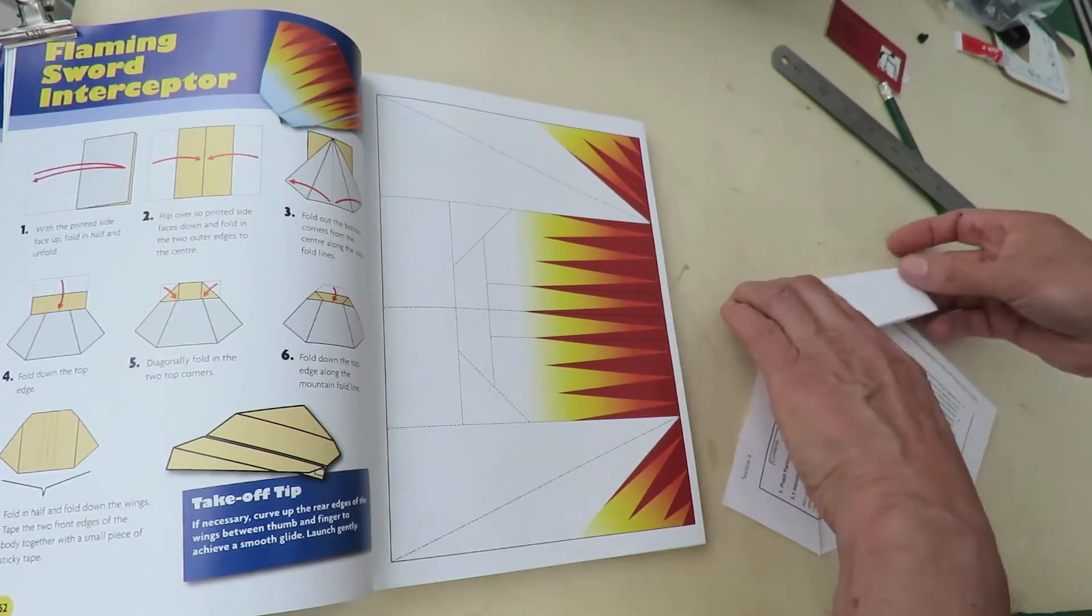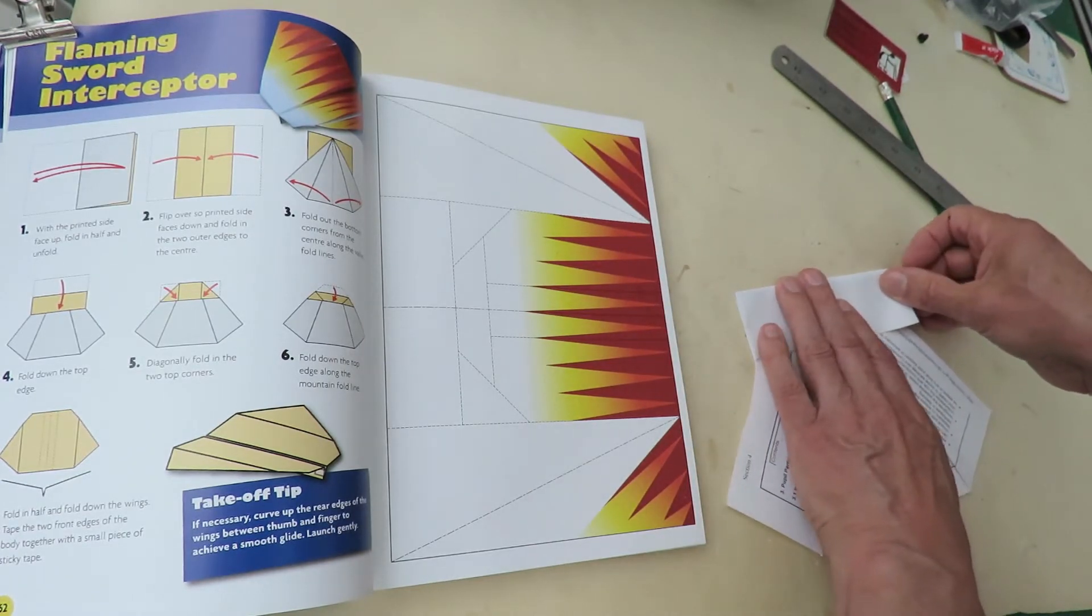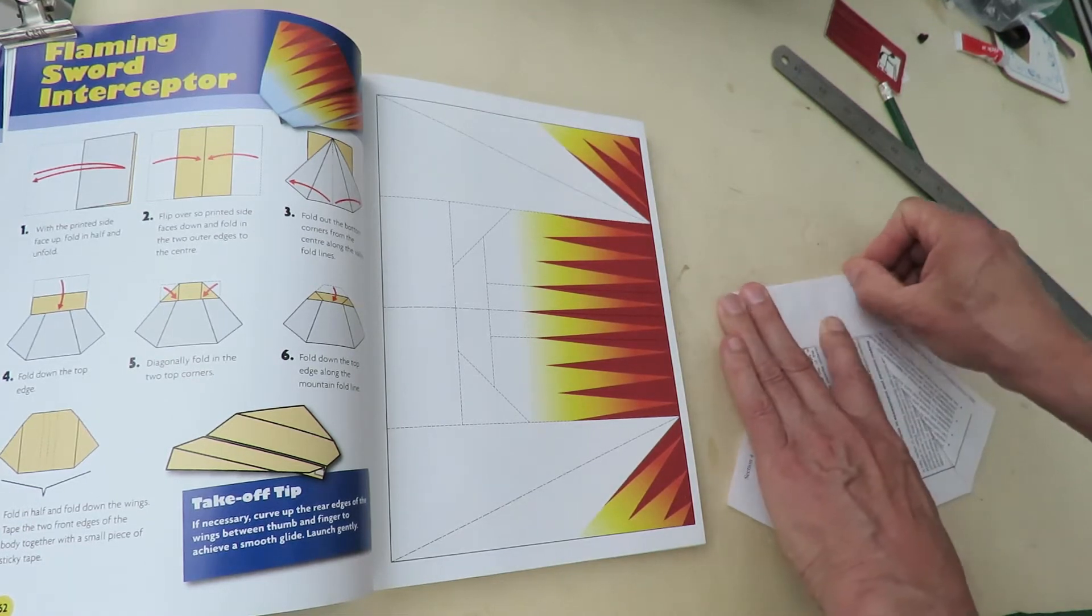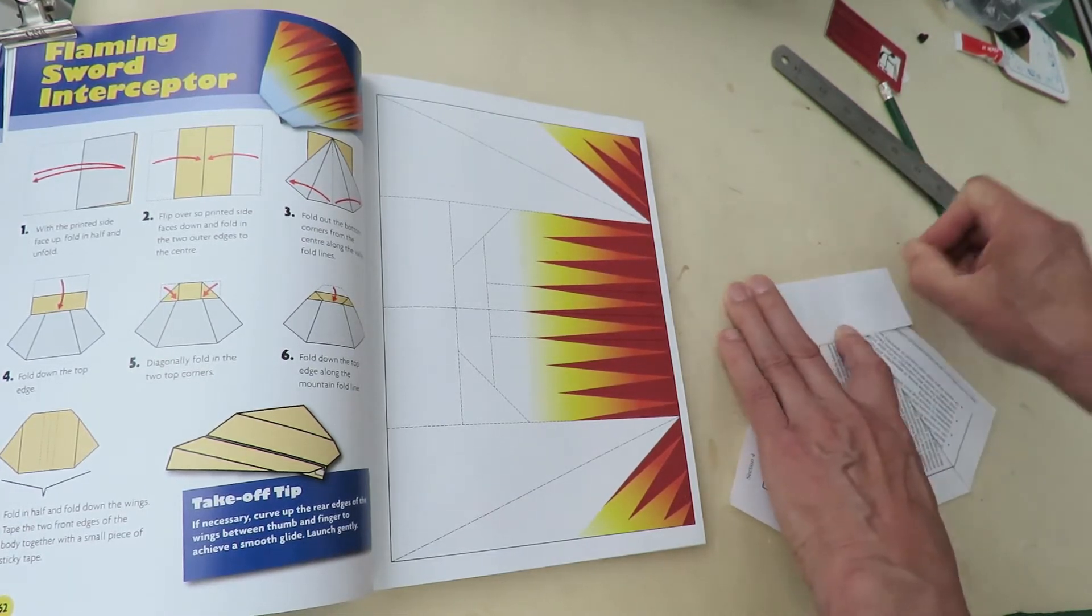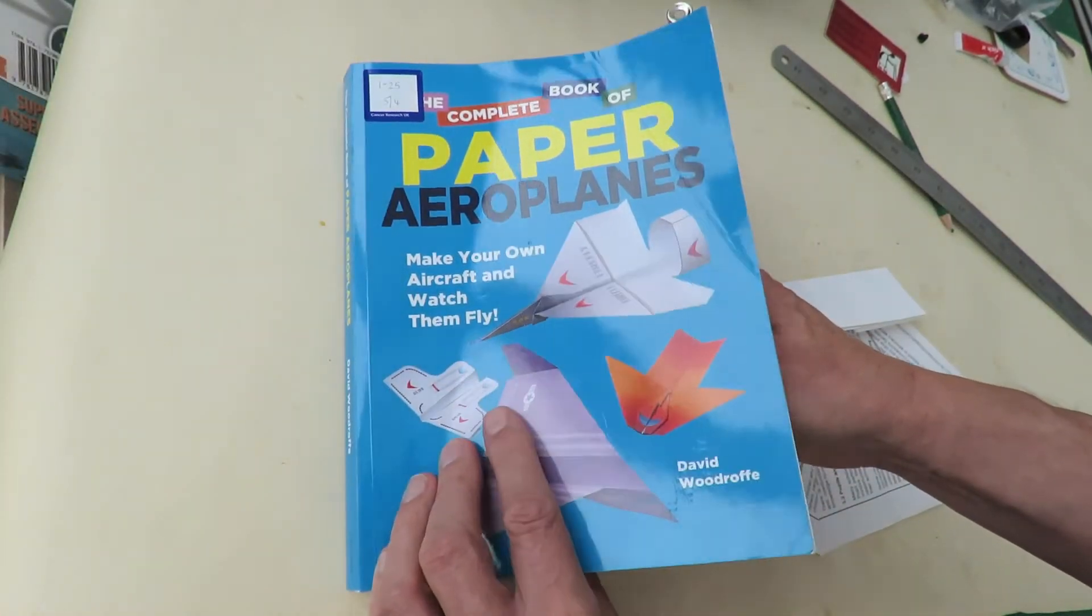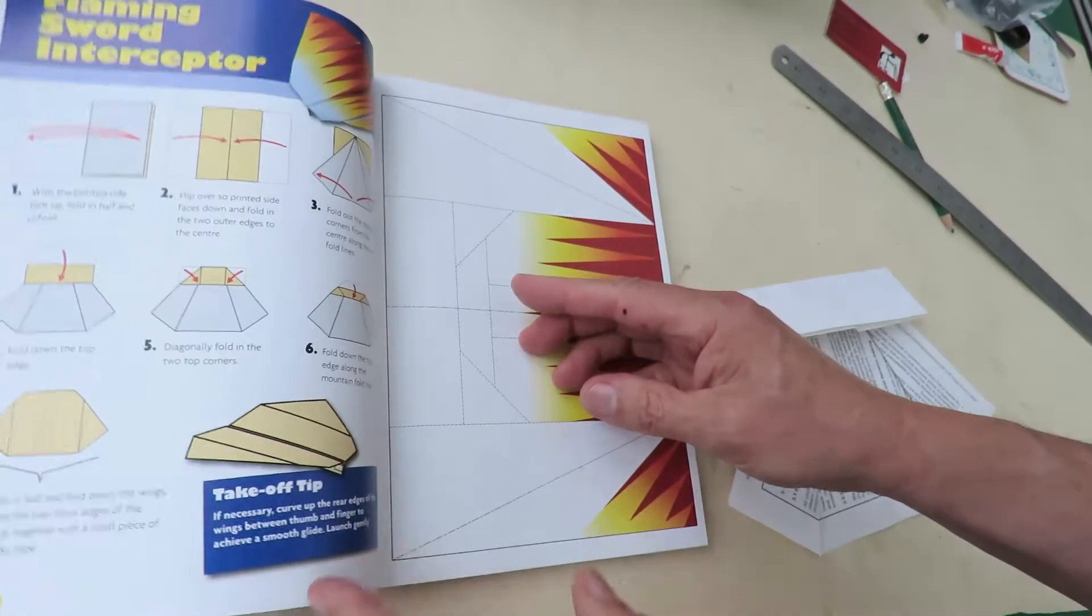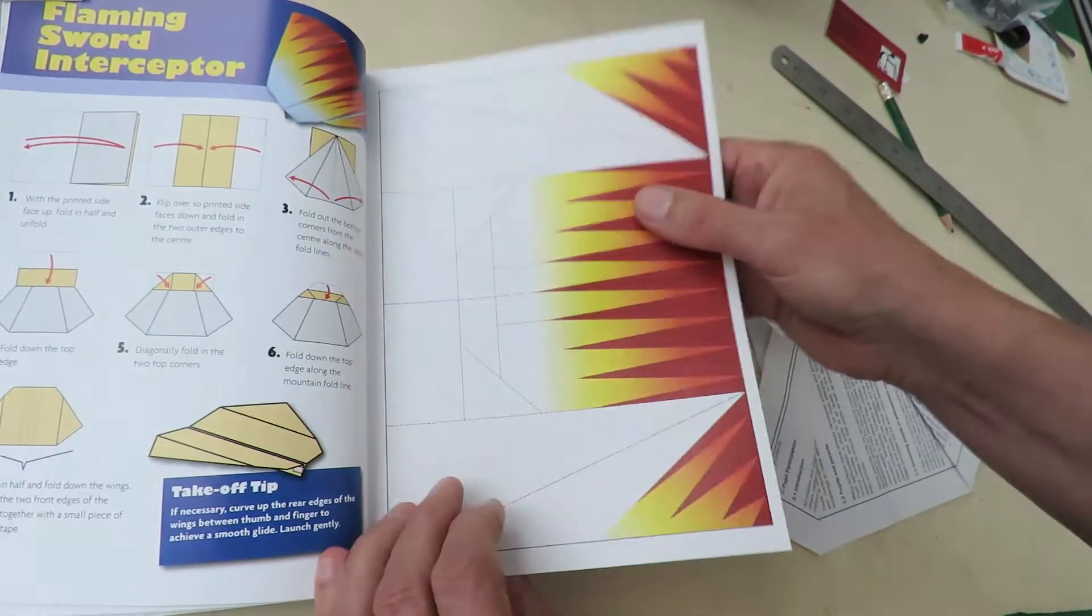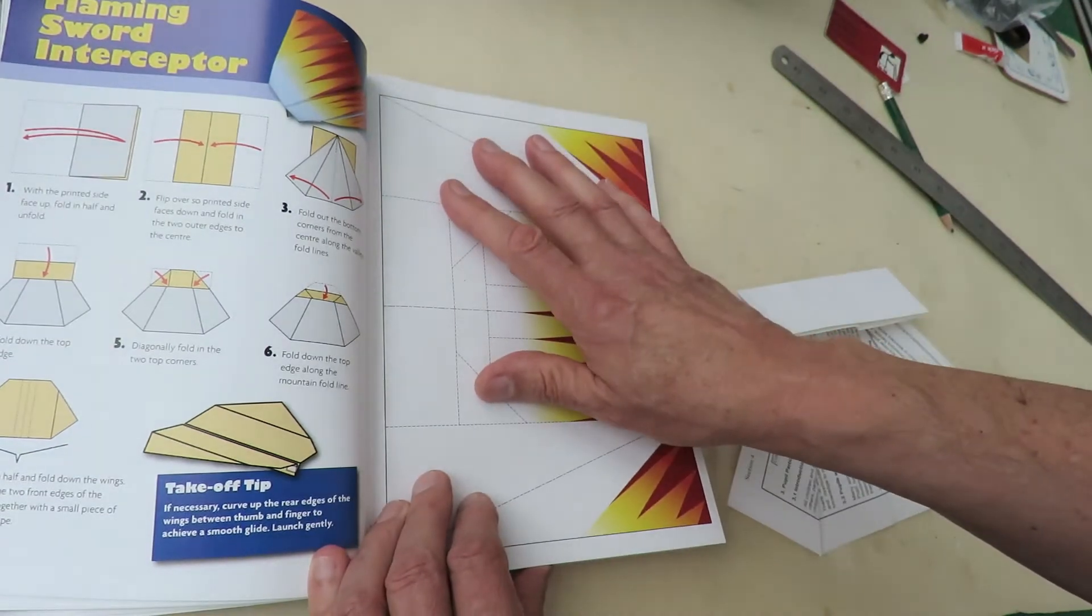And, as I try to remember to tell you each time, this book I bought in a charity shop for only £1.25. And, it's arranged so the instructions are on the left side, and you're supposed to tear this page out on the right hand side and fold it up.